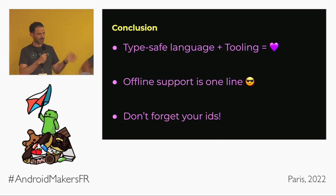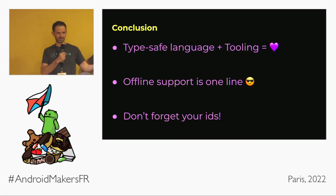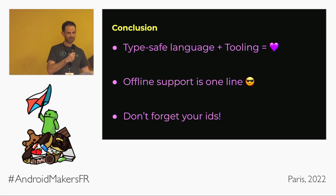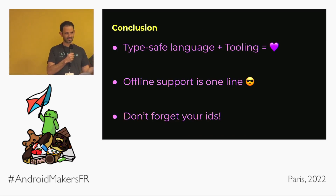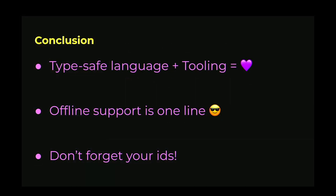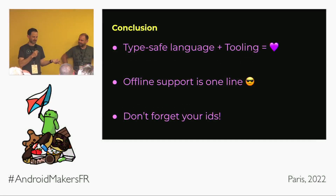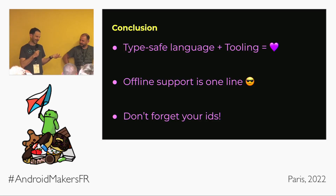In conclusion: GraphQL is a type-safe language with a lot of tooling that allows you to build great things. You can add offline support with just one line, and if you're planning to use the normalized cache, make sure to include your IDs.